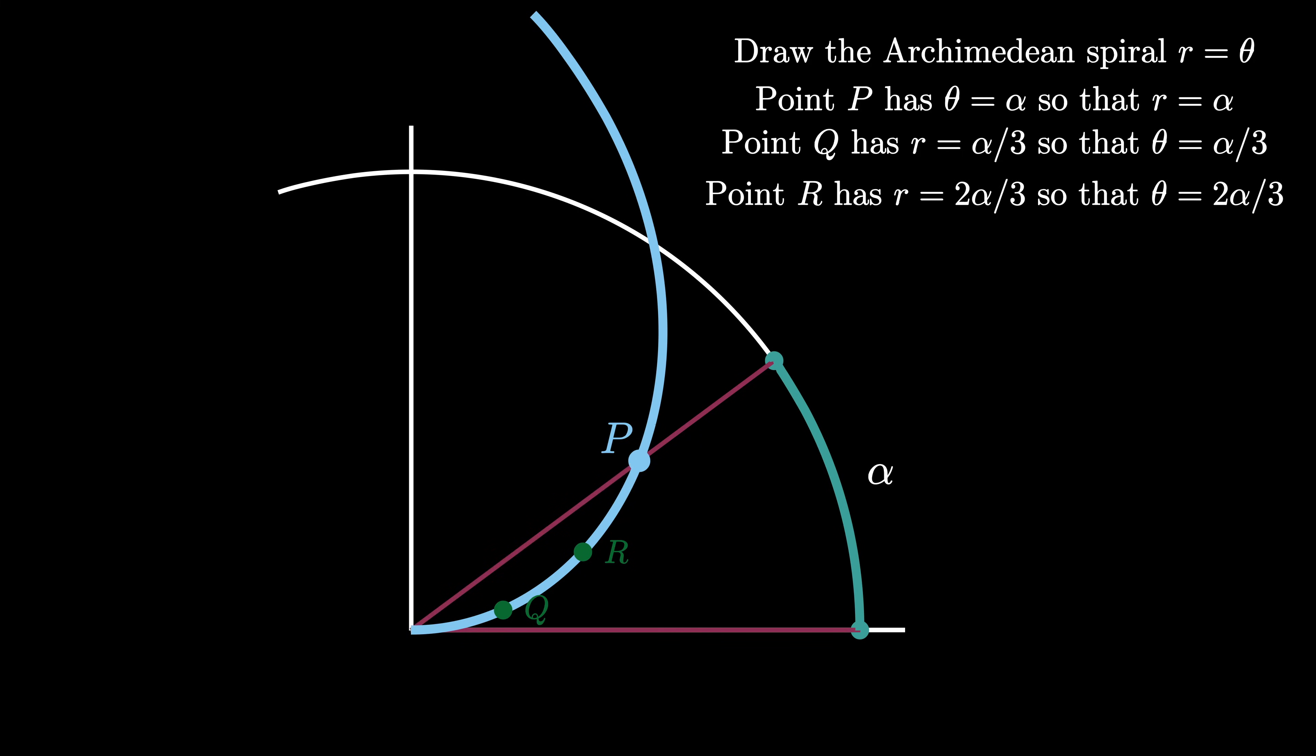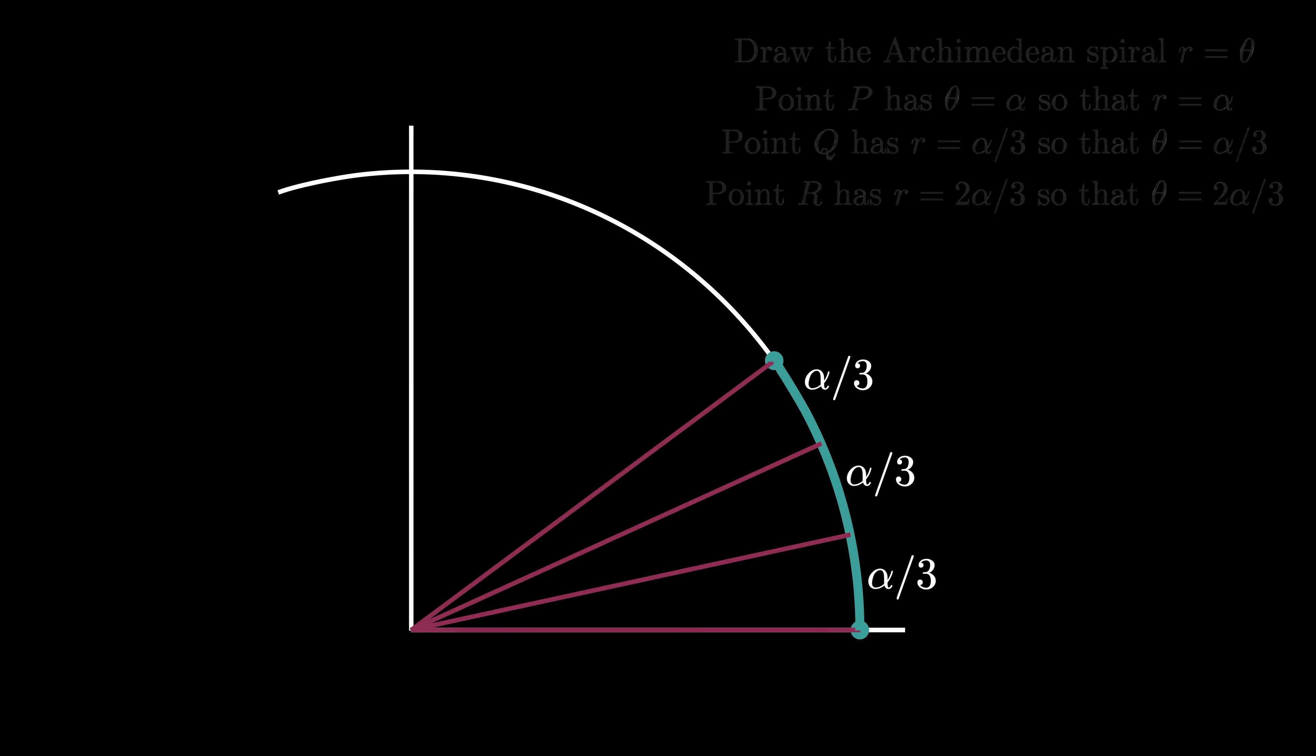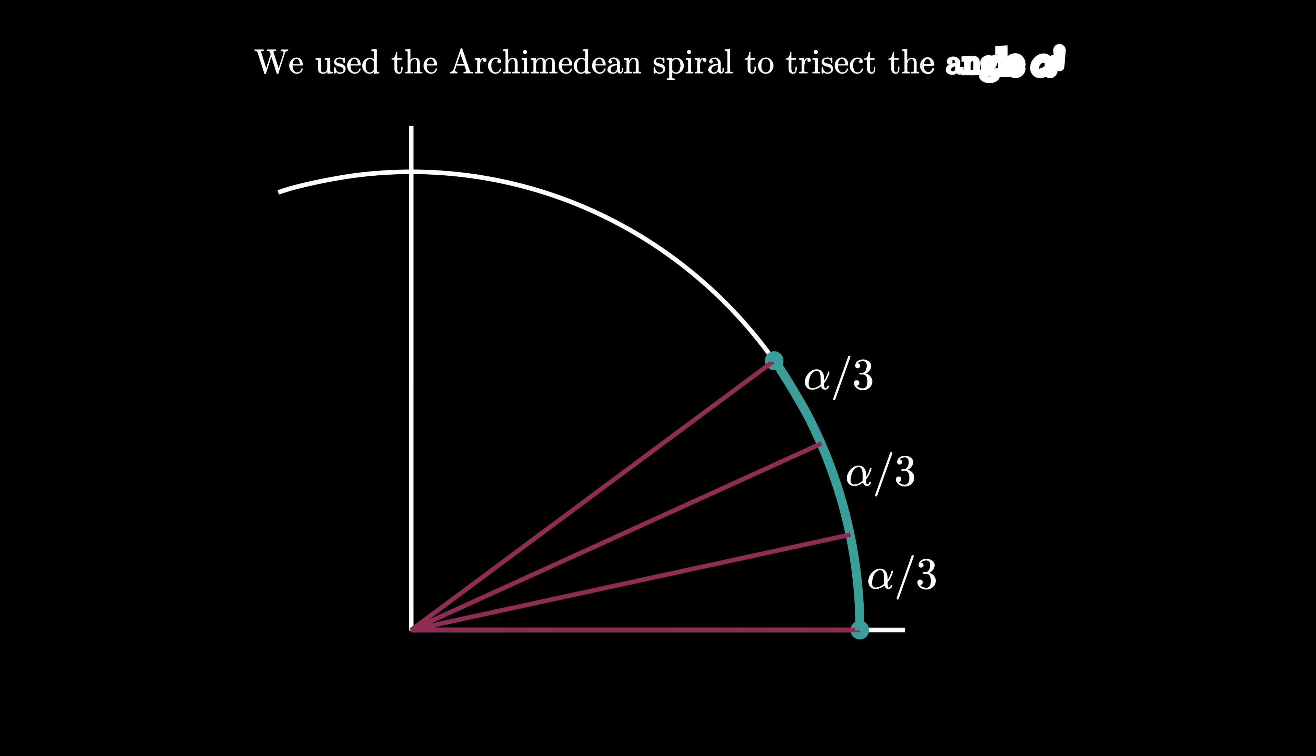And now we can finish off our problem. We connect the origin to point Q and the origin to point R. And sure enough we have divided the angle alpha into three separate angles all of measure alpha over 3. This means that we've used the Archimedean spiral to trisect any angle alpha.